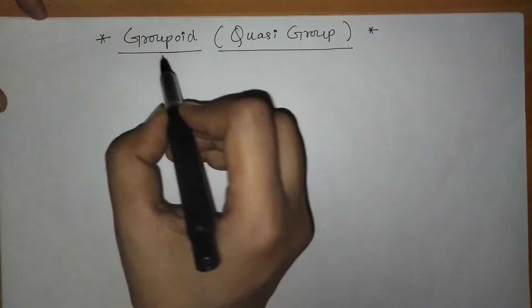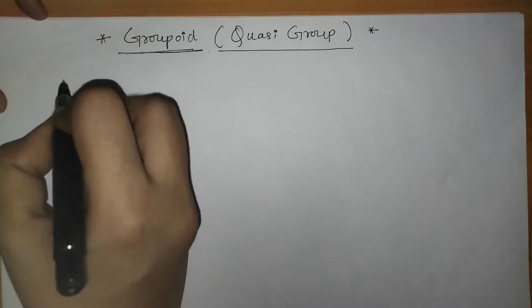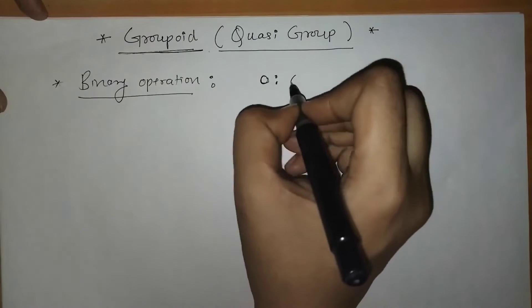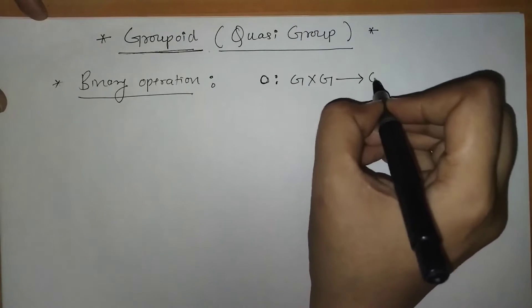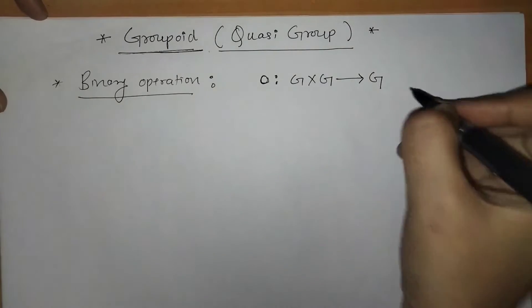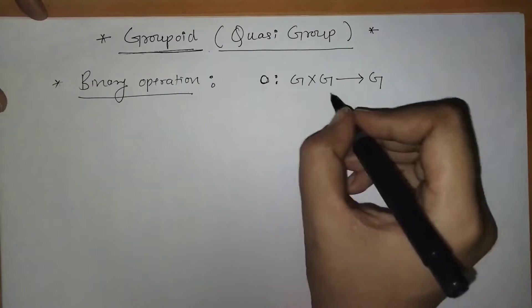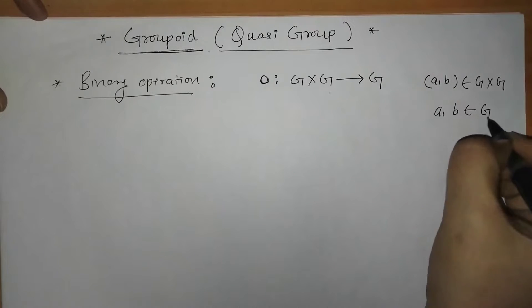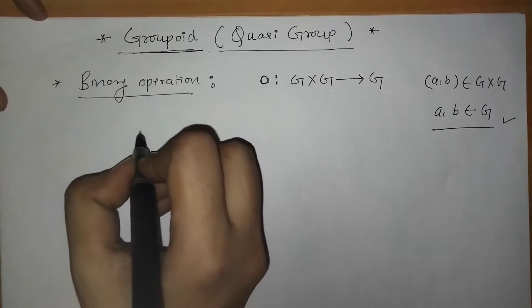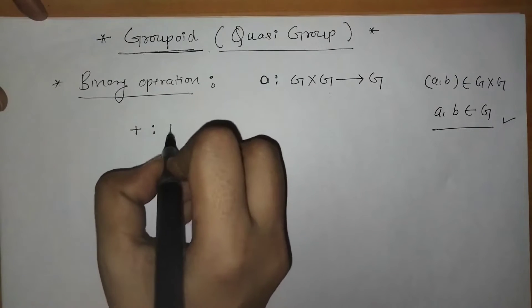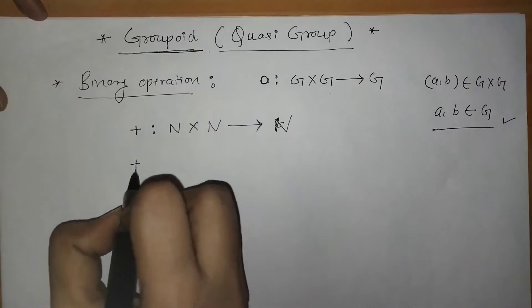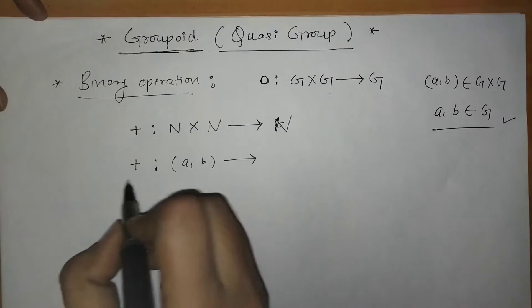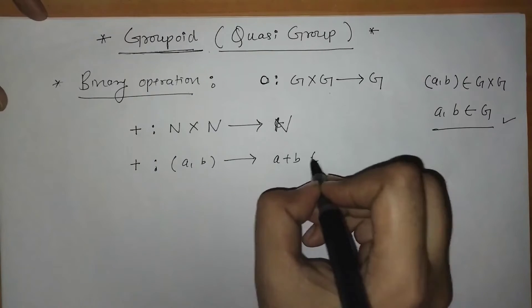Hello everyone, welcome to Unlock Maths. Today we have to see groupoid. To know groupoid, we should know binary operation. We know that binary operation is a function from set G cross G to set G. The elements of G cross G are ordered pairs where a and b belong to set G. For example, on the set of natural numbers, addition is a binary operation when we take any two elements.